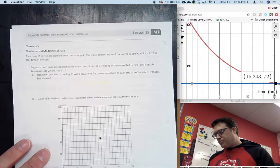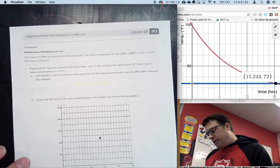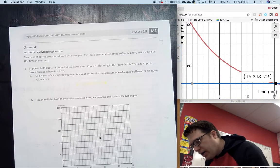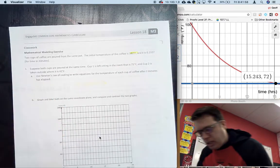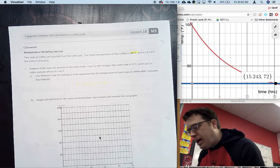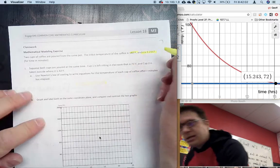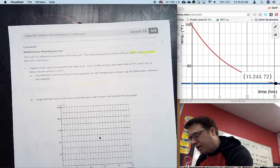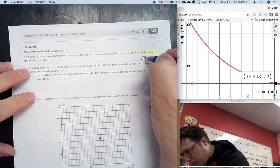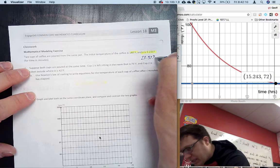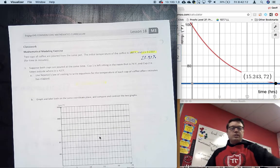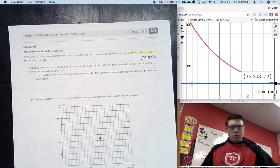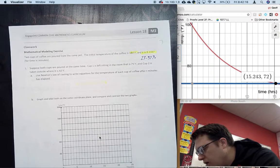Two cups of coffee are poured from the same pot. Next page, page 18. The initial temperature of the cup of coffee is 180 degrees Fahrenheit, and K was calculated specific to the scenario. K is 0.2337 - there's a 23.37% loss in energy every minute.